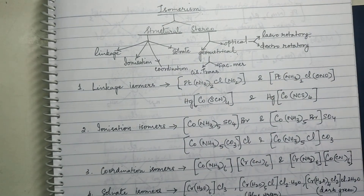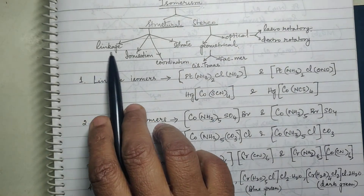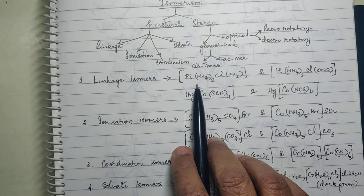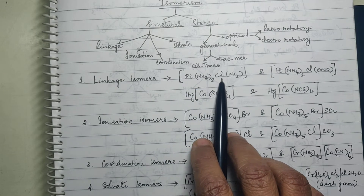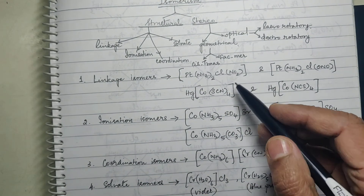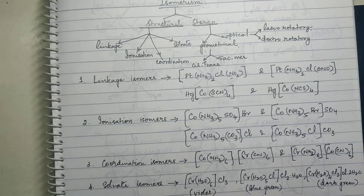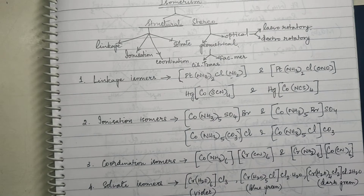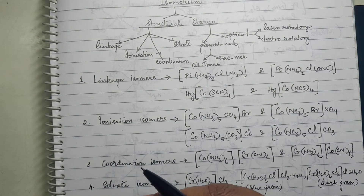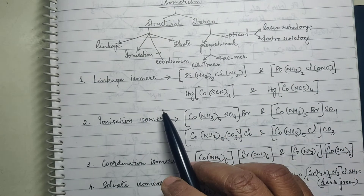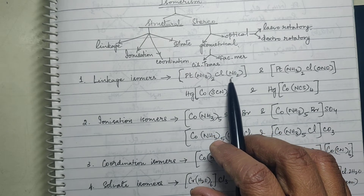Let us see the first one — linkage isomerism. The name itself suggests something related to the linking of atoms. For example, Pt(NH₃)₂Cl(NO₂): here NH₃ is a ligand, Cl is a ligand, but NO₂ is an ambidentate ligand. An ambidentate ligand is one that has more than one donor atom, but only one donor atom acts as the link at a time.